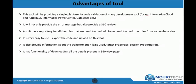The advantages of this tool over other tools: it provides a single platform for code validation of many development tools — be it ICS, earlier known as Informatica Cloud, ICRT, Informatica Power Center, Data Stage. It will not only provide error messages but also provide a 360 Review, which is the most powerful feature. It also has a repository for all the rules, so you don't need to go here and there to check what rules need to be implemented. It's very easy to use — just export and import — and it provides information about transformation logic, target properties, session properties, with the functionality to download all details from the 360 View page into an Excel sheet.